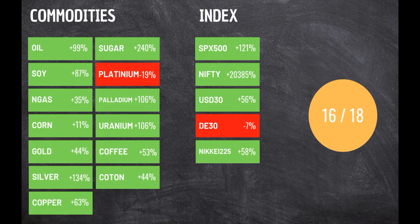Now let's see the test I did on commodities and indexes. In total I ran the script on 18 assets and the results were pretty nice as you can see. We finished green on 16 out of 18 assets.